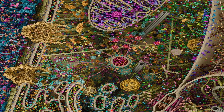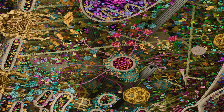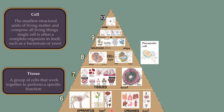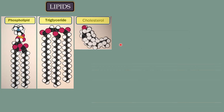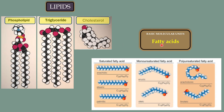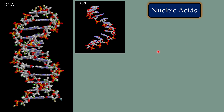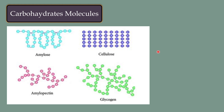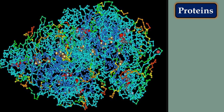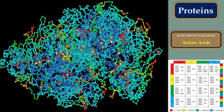The cell also contains organic molecules or biomolecules that are classified into four main groups: lipids, nucleic acids, carbohydrates, and proteins. The basic molecular units of lipids are fatty acids; for nucleic acids, nucleotides; for carbohydrates, monosaccharides; and for proteins, amino acids.